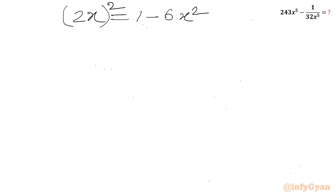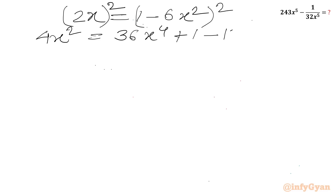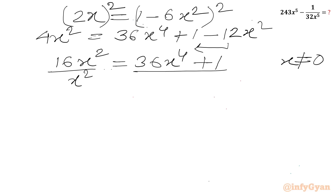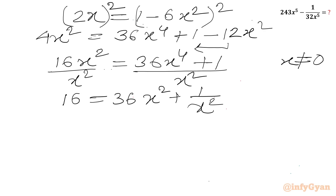Squaring once again: the LHS gives 4x², and the RHS will be 36x⁴ + 1 minus 12x². Taking the minus term to the LHS, it adds to give 16x² = 36x⁴ + 1. Since x ≠ 0, we divide both sides by x², giving 36x² + 1/x² = 16.